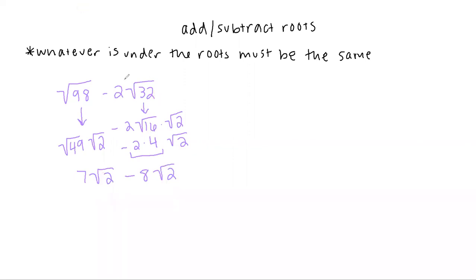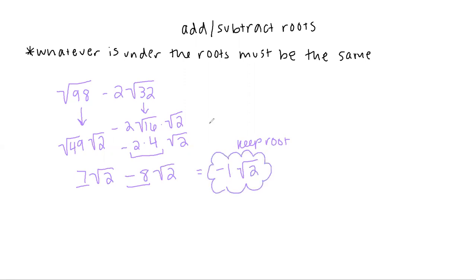When combining, you just add what's outside normally: 7 minus 8 is negative 1, and you keep whatever the root is. So our answer is negative 1 times root 2, or negative root 2. This one is easy to check in your calculator — type the original problem to get a decimal, then type your answer and confirm you get the same decimal.